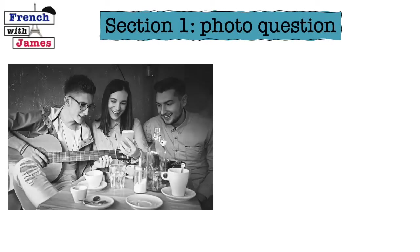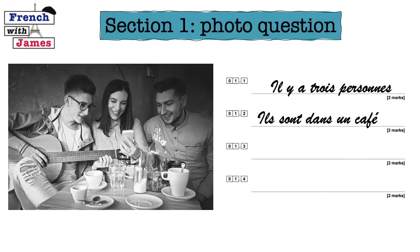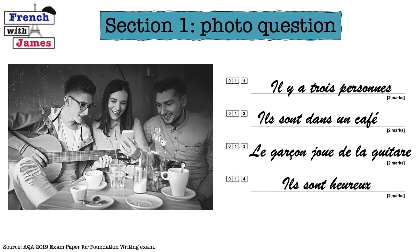Now we'll look at a quick example. If this were the photo we were confronted with in Section 1, there's quite a lot we could say. We could say 'il y a trois personnes' or 'je vois trois personnes'. 'Ils sont dans un café' — they're in a coffee shop. 'Le garçon joue de la guitare' — the boy is playing the guitar. 'Ils sont heureux' — they are happy — or even 'je pense qu'ils sont heureux', I think that they are happy.